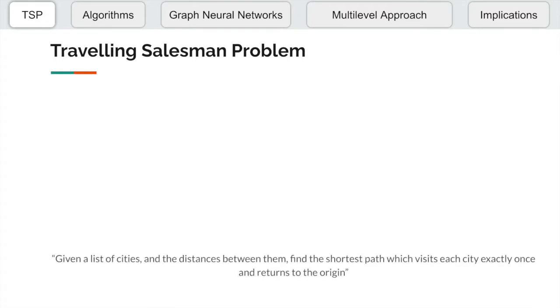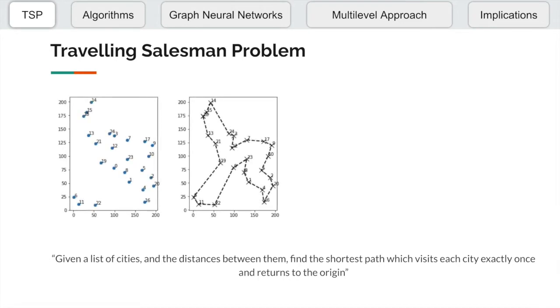Given a list of cities and the distances between them, TSP asks for the shortest tour which visits each city exactly once and returns to the origin.